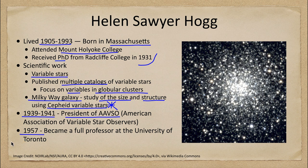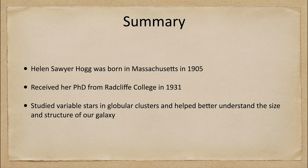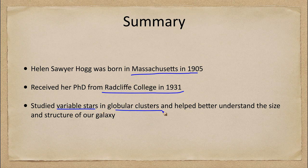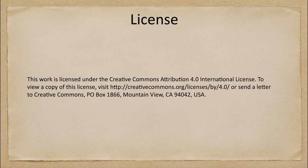In summary, Helen Sawyer Hogg was born in Massachusetts in 1905 and got her PhD from Radcliffe College in 1931. She studied variable stars, especially in globular star clusters and within our own galaxy, to help us understand the size and structure of the Milky Way. That concludes this discussion of Helen Sawyer Hogg and her contributions to astronomy. We'll be back next week to discuss another woman in astronomy — have a great day, everyone, and I will see you in class.